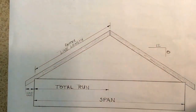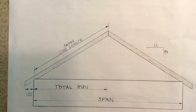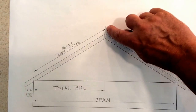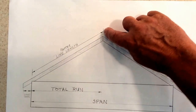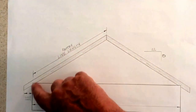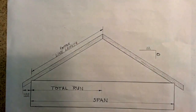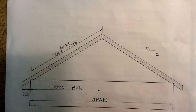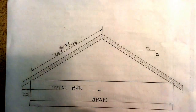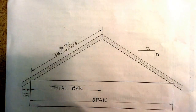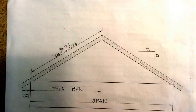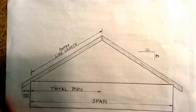That will be from the center of the ridge to the edge of the wall — that is our rafter length. It does not include our overhang. We will discuss overhangs in another video.